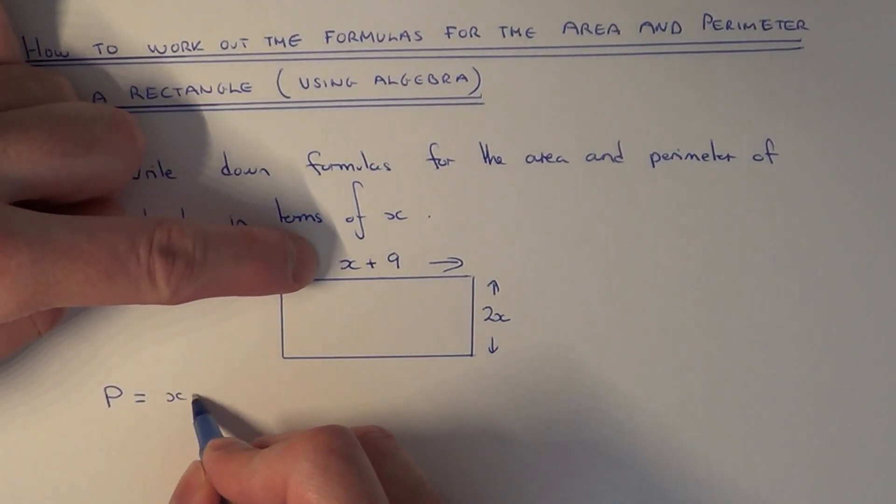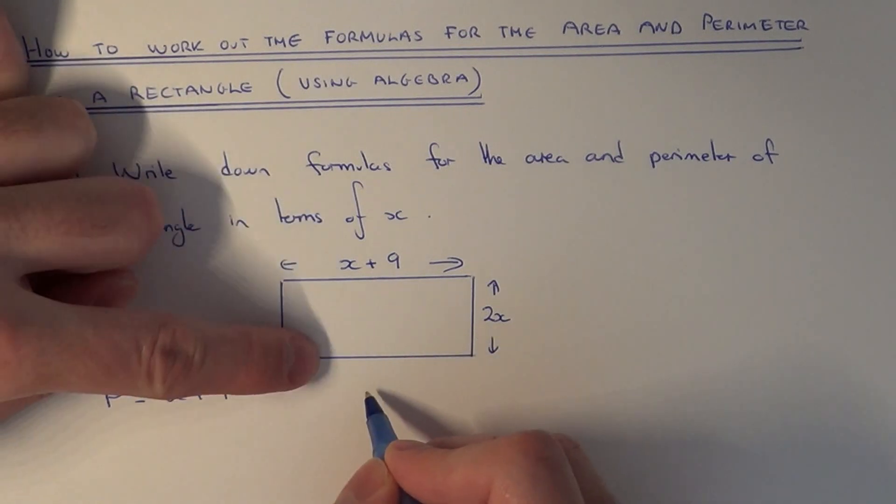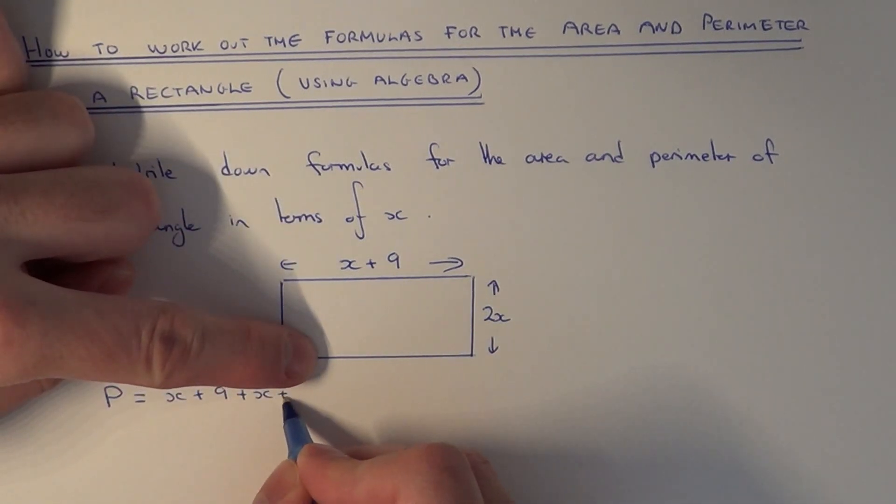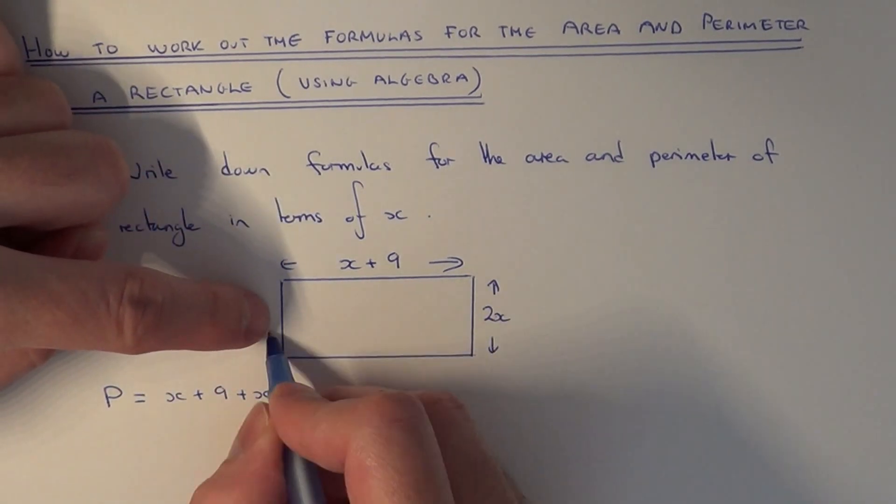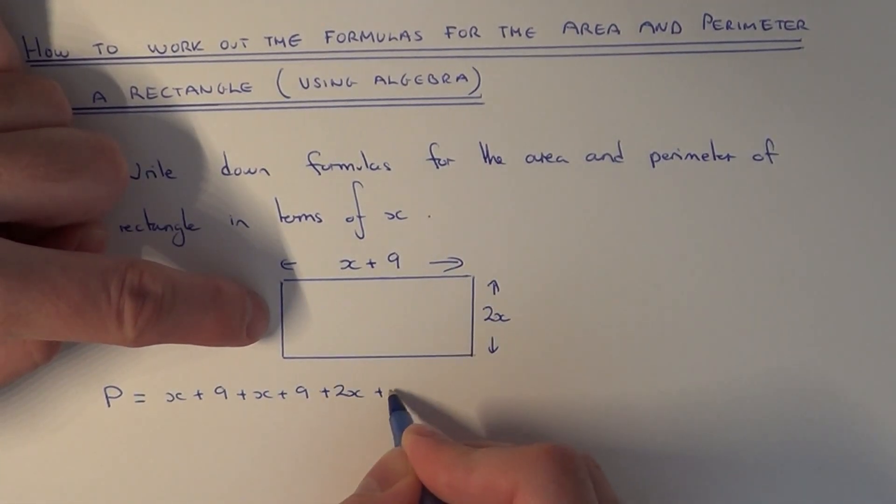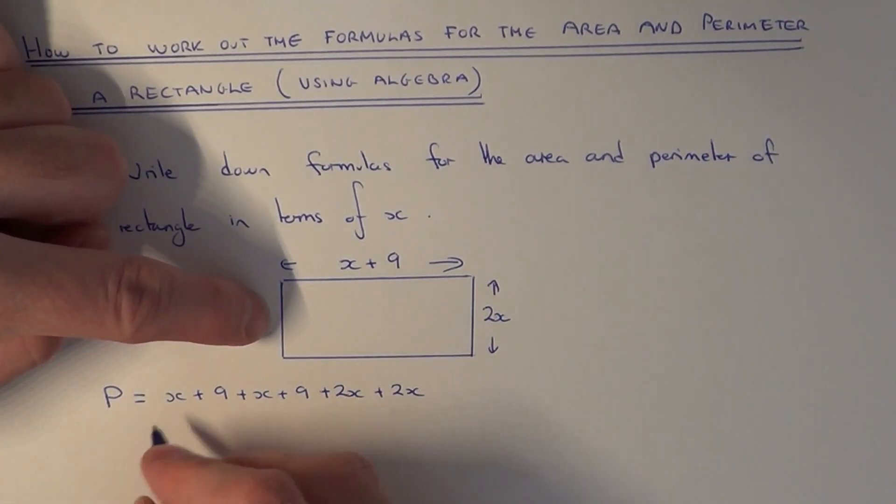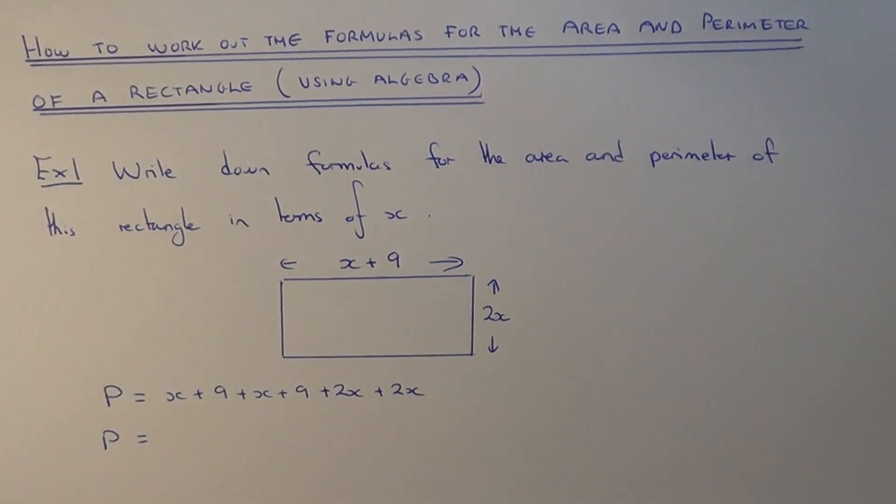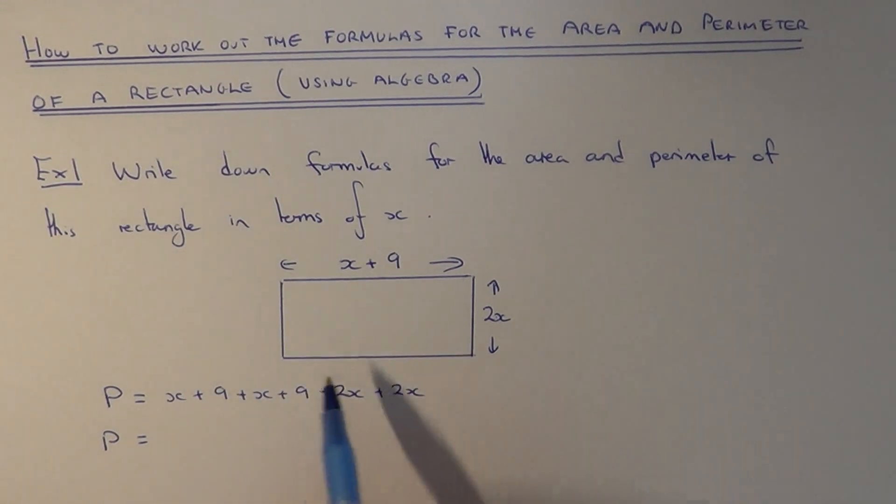So we've got x plus 9 and we've got another x plus 9 and then we've got the other two sides which are 2x and 2x. So we just now need to simplify the right hand side.